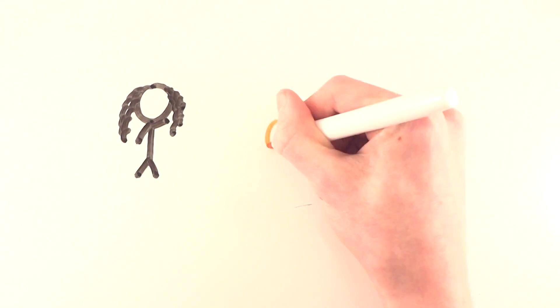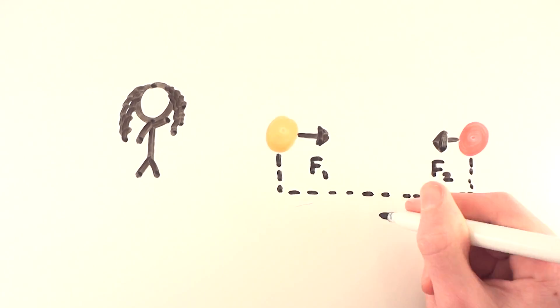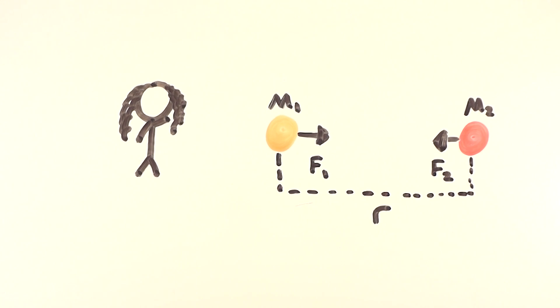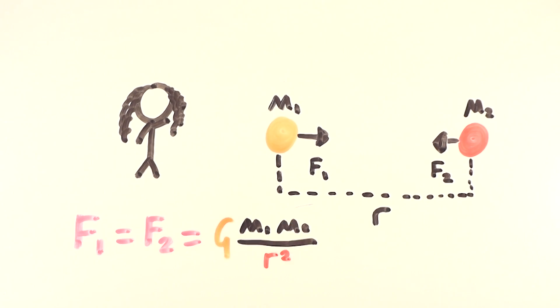Assuming you covered some sort of physics throughout high school, you would have at least come across Newton's law of universal gravitation, which states that any two bodies in the universe attract each other with a force directly proportional to the product of their masses and inversely proportional to the square of the distance between them.